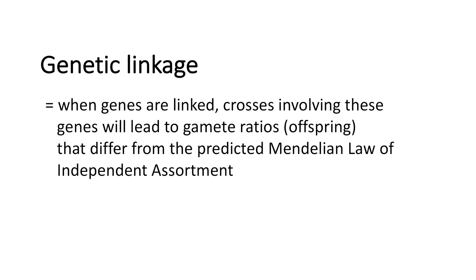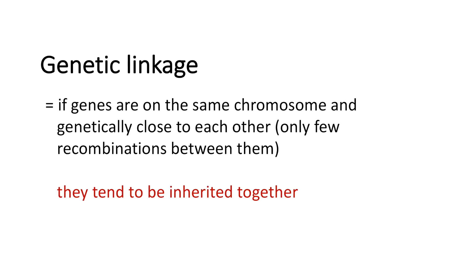We can talk about genetic linkage now. Genetic linkage occurs when we have gamete ratios that differ from our predicted Mendelian law of independent assortment. Genetic linkage is when genes are on the same chromosome and genetically close to each other.